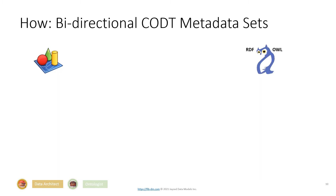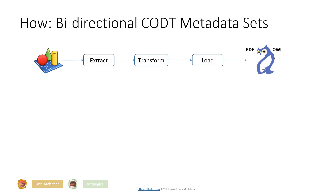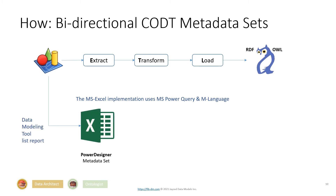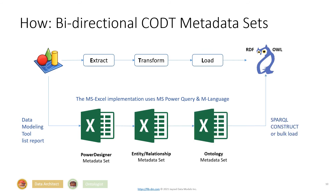How do the bi-directional COD metadata sets work? On the left-hand side you have a symbol for Power Designer, the modeling tool; on the right-hand side, the bird for the ontologies. The transformation is a basic ETL — extract, transform, and load — implemented in MS Excel using Microsoft Power Query and the Microsoft M language. The first step is in the data modeling tool: we create list reports and populate the tool-specific Power Designer metadata sets. Then we transform this into a generic representation independent of the particular modeling tool version, transform it into an ontology metadata set, and then use SPARQL CONSTRUCT or bulk bike load to populate.